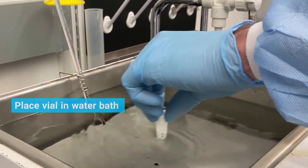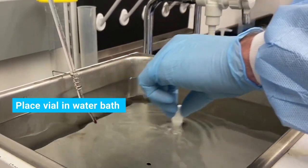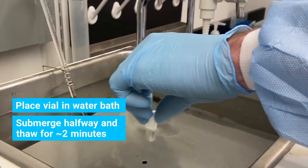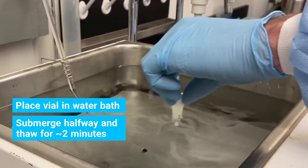Place the vial of cryopreserved PBMCs in the water bath. Submerge the vial halfway and thaw for approximately 2 minutes by gently swirling in the water.